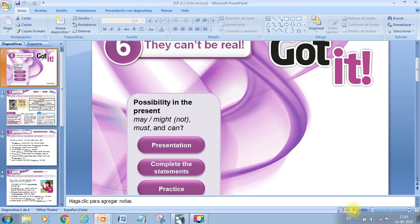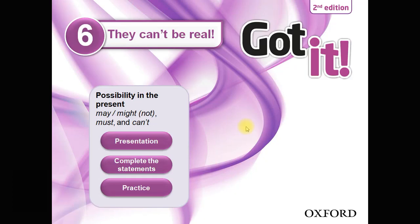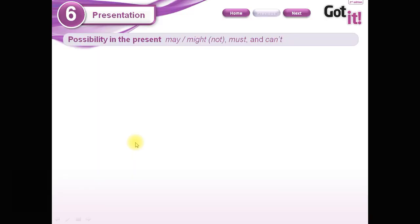Hello children! Today we are going to start with the explanation of the content of unit number 6. Remember, we are on unit number 6 — 'They can't be real' — the unit about paranormal things, like Sasquatches and those things. Let's start.